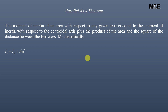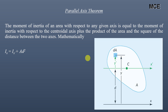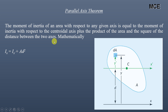Before solving the problem, let us recap the parallel axis theorem of the moment of inertia. This parallel axis theorem states that the moment of inertia of an area with respect to any given axis is equal to the moment of inertia with respect to the centroidal axis, plus the product of area and the square of the distance between the two axes.